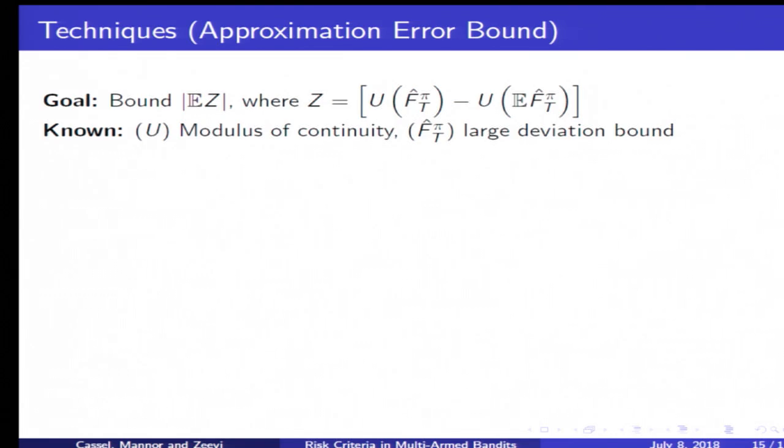I assumed I would not be able to delve into the technicalities, and this is very high level, but essentially the main technical difficulty in this problem is bounding the approximation error. The approximation error is bounding this absolute expected value of the random variable Z, which is essentially the difference between the performance measured by the function U on the empirical distribution—our actual performance—to that measured on the expected value of the empirical distribution.